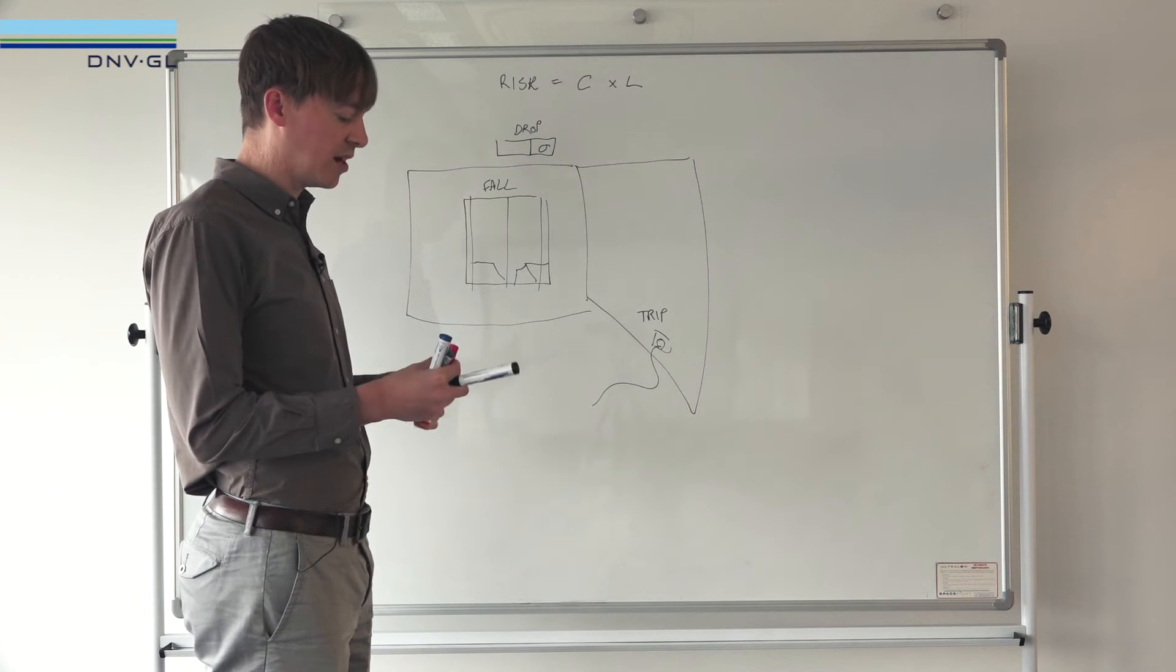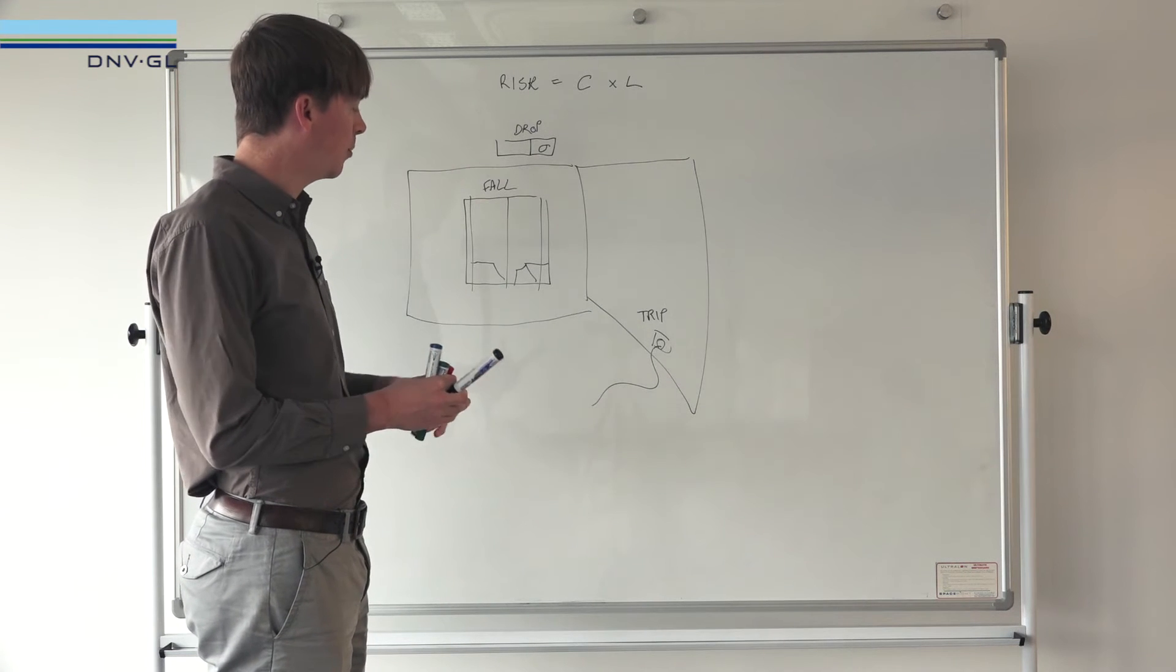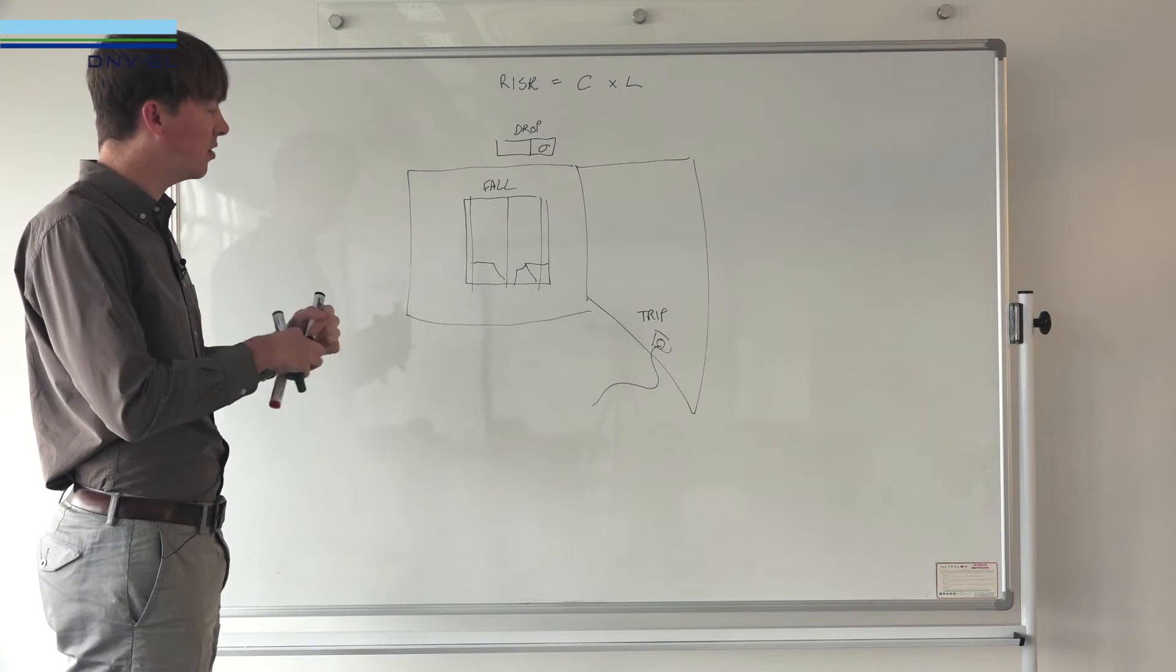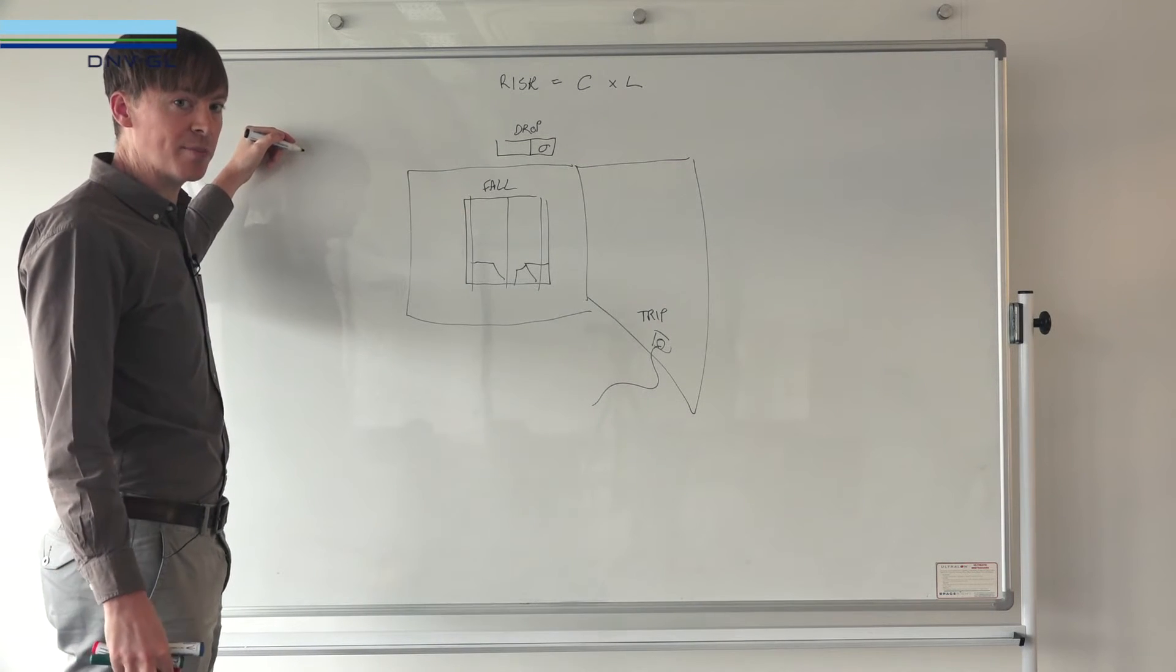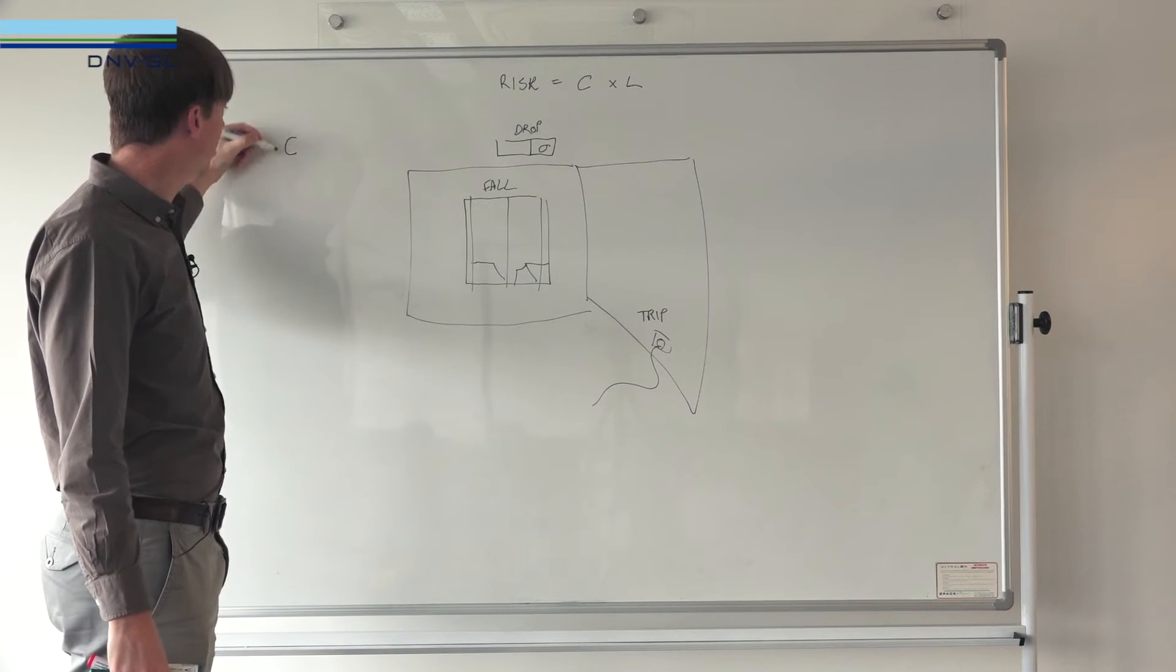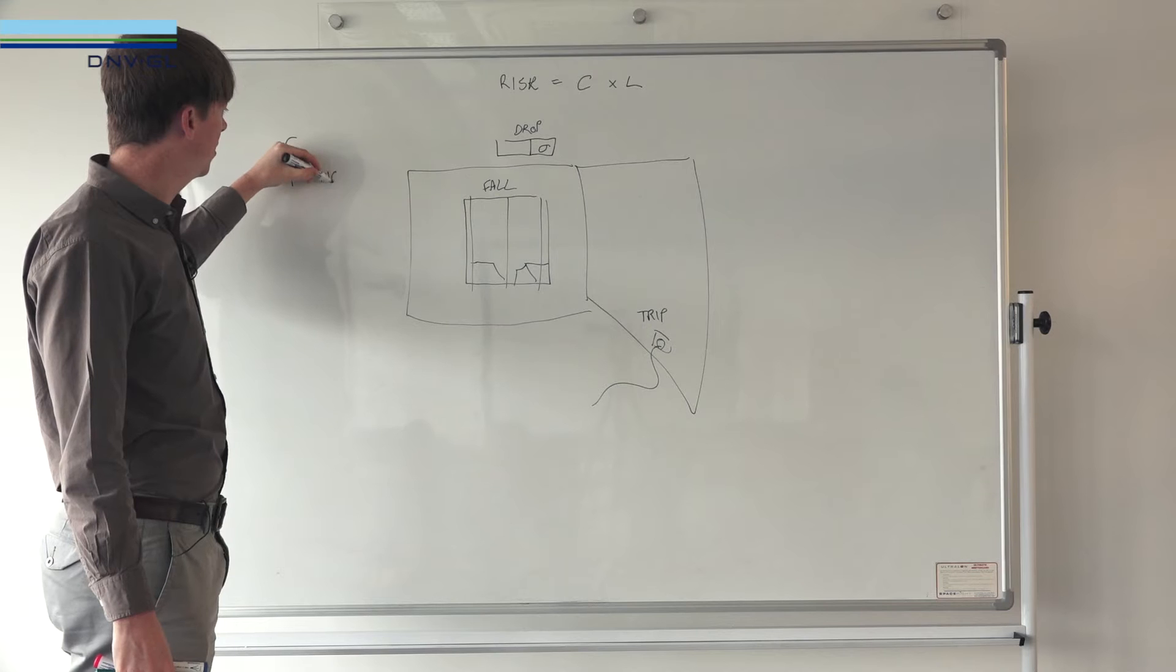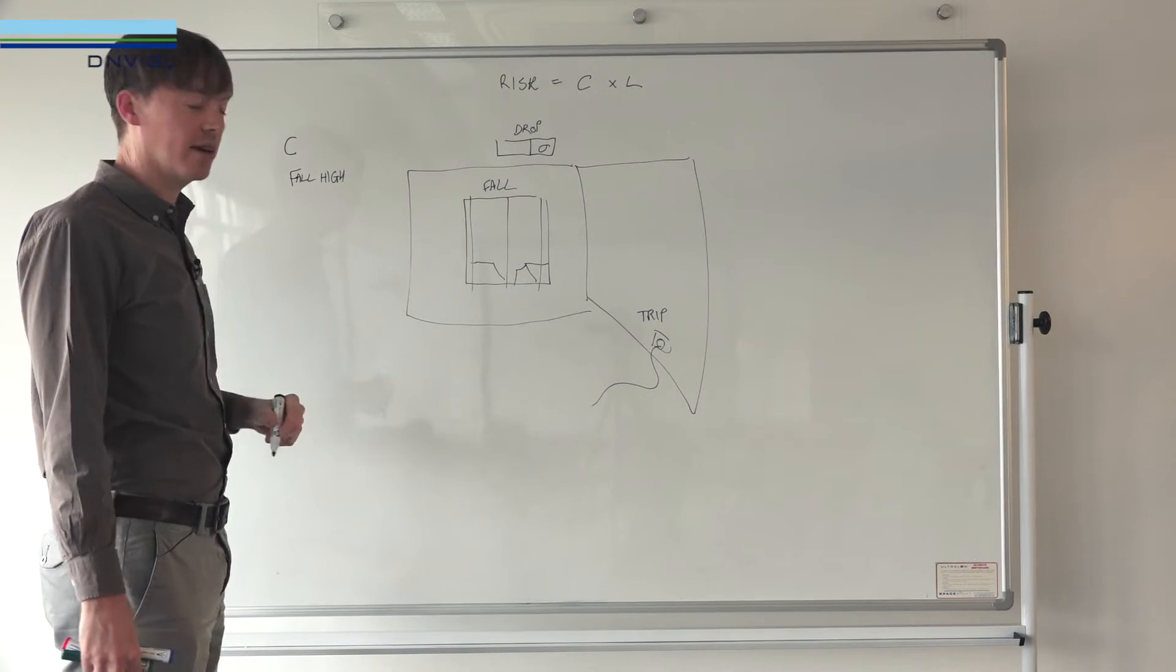Let's think about this from a consequence perspective and do some kind of ranking. We're just going to come up with a list. If I was to fall from the window, the consequences would be pretty bad from the fourth floor, so from a consequence ranking, fall would probably be a very high consequence.